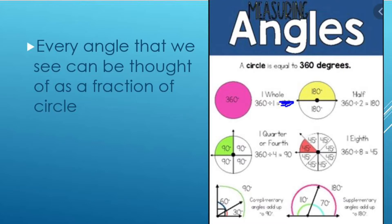If I take that same circle but this time I cut it in half, I now have 360 divided by two, meaning each part of that circle is 180 degrees.